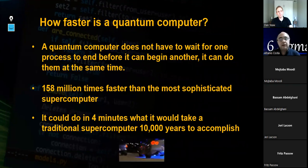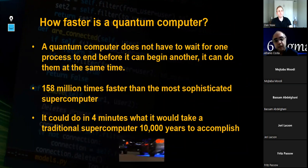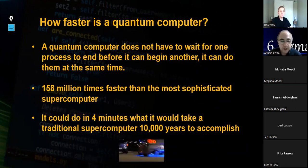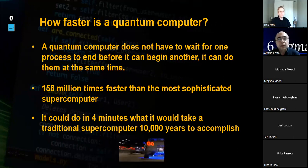How fast is a quantum computer? Because of the phenomenon of superposition and entanglement, a quantum computer does not have to wait for one process to end before it can begin another. It can do them all at the same time. Then we have results that we have 158 million times faster than the most sophisticated supercomputer that we have today. It could do in four minutes what it would take 10,000 years to accomplish in a traditional supercomputer because of the characteristics of a quantum element.